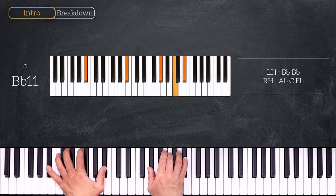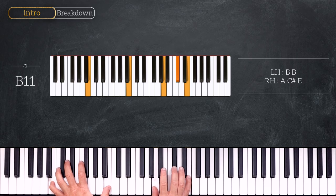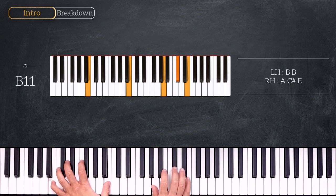From here we'll take all the notes up one half step. That gives us B11 and we have octave B on the left hand and A, C sharp, E on the right.